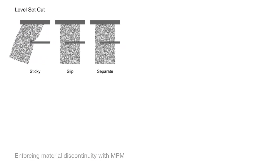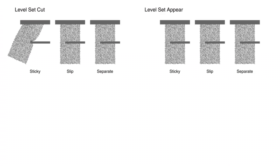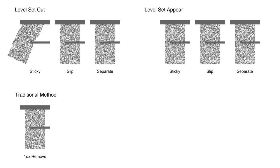To motivate our method, let's first consider the limitations of traditional grid-based level sets on a 2D cutting example. A moving thin level set will either be treated as a collider or completely ignored by the material. Putting the level set directly inside also doesn't work, since the interpolated velocity field is still continuous. Other common approaches include particle deletion and softening.